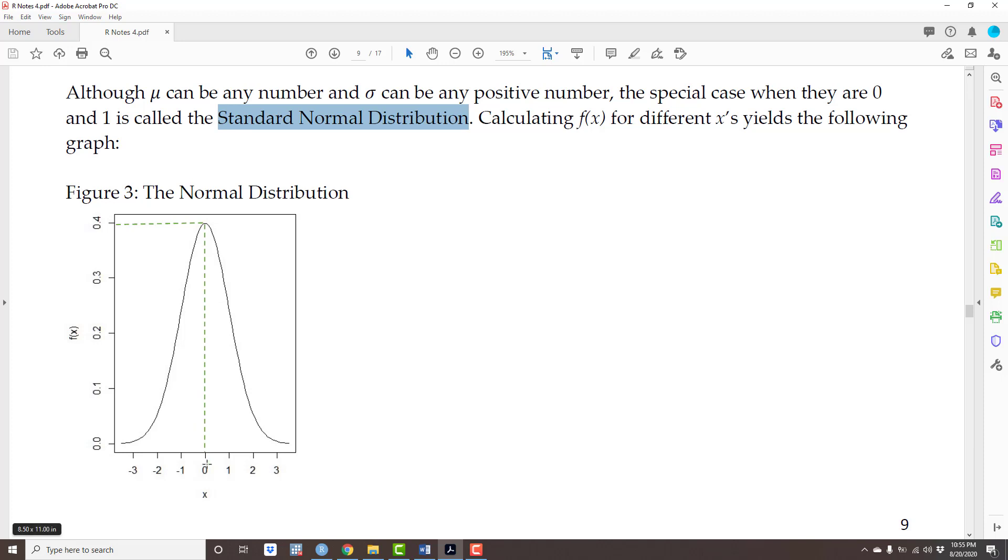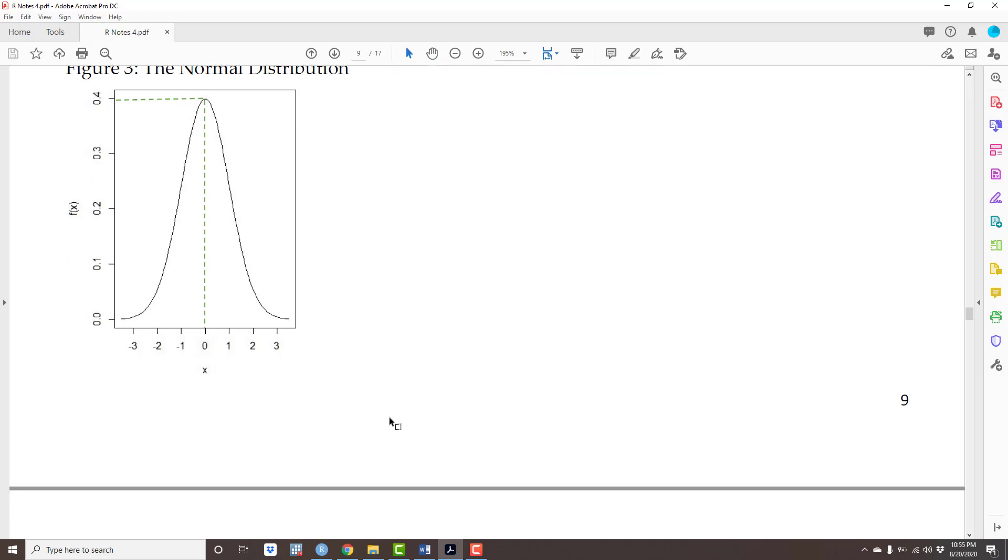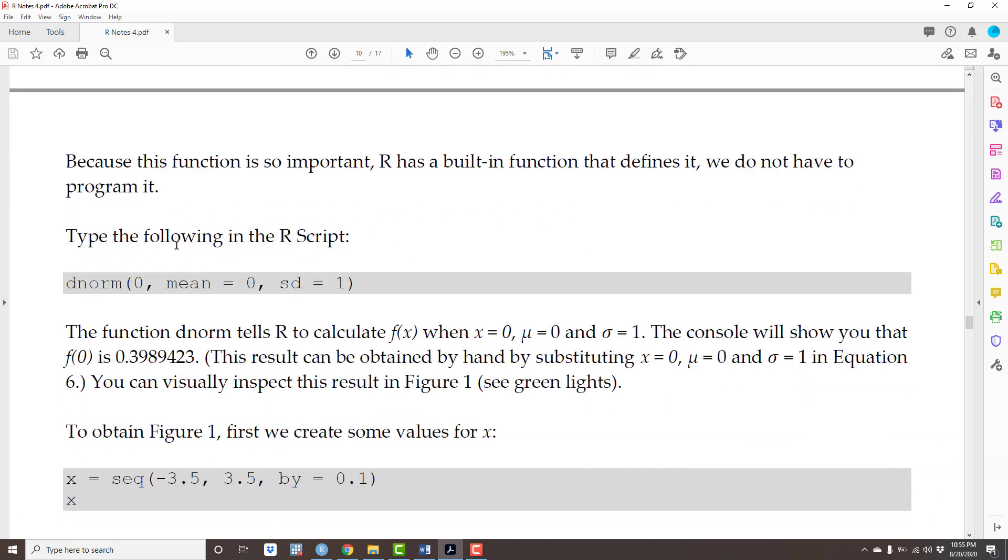Okay, now let's work on this graph here. Because this function is so important, we don't actually have to calculate it by hand like we did. R has a built-in function that defines it. Type the following function in the script file: dnorm().